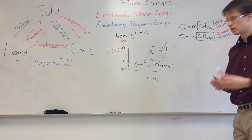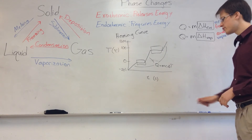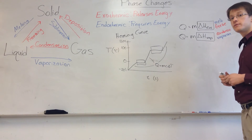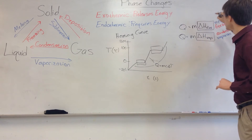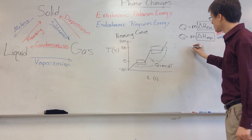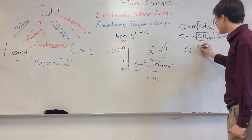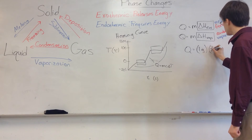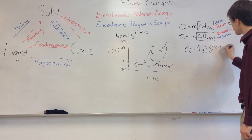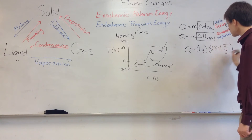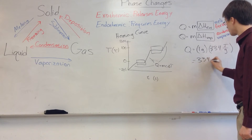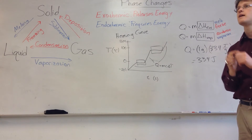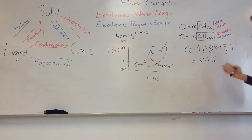For example, if I want to know how much energy it takes to melt a gram of ice, I look up the heat of fusion of ice — because melt means heat of fusion. So the amount of energy needed is the mass of the ice — one gram — times its heat of fusion. The heat of fusion of water is 334 joules per gram. So you get 334 joules. It requires 334 joules to melt a single gram of ice. This isn't going to change its temperature at all — this is just for melting it.